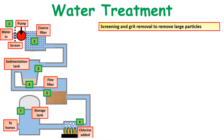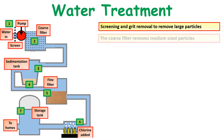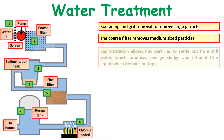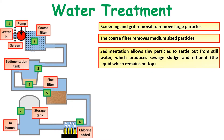Looking at the process as a whole: we start with screening, which removes grit and large particles such as branches, trees, leaves, and fish. A coarse filter is then used to remove medium-sized particles. Sedimentation then allows tiny particles to settle out in still water, producing sewage sludge and effluent, which can then be scraped off the top.